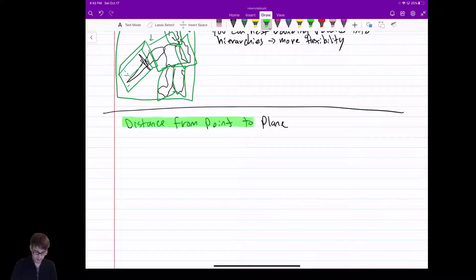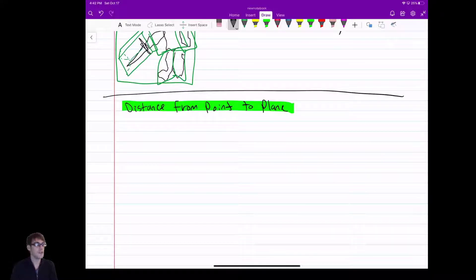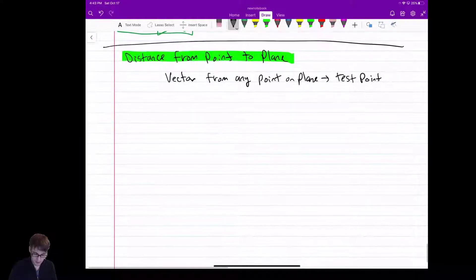And again, like so many things in linear algebra, unlike quaternions, it turns out to be really simple. This is how we do it. But first, we make a vector from any point on the plane to our test point. And the test point is the one that we're checking how far away from the plane. So let's see if I can start drawing this out.